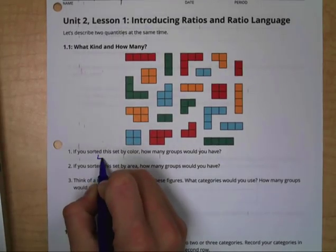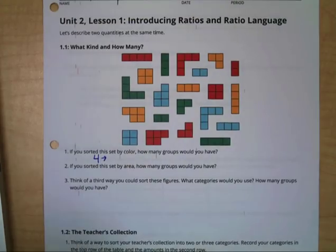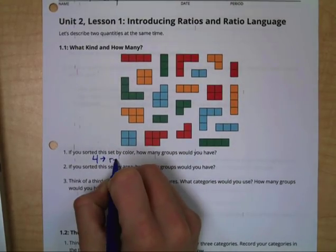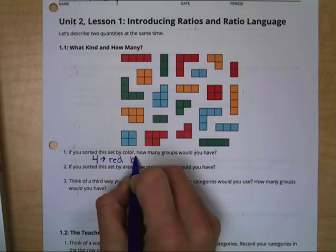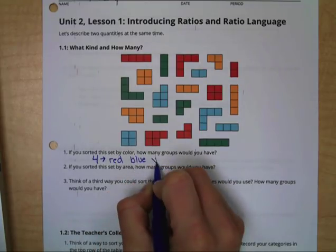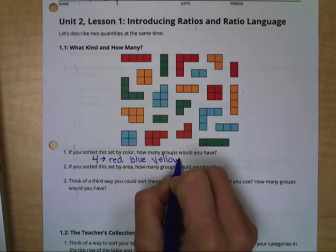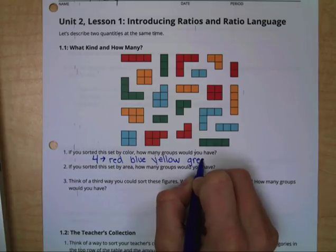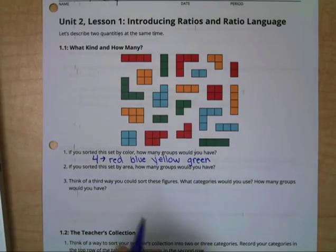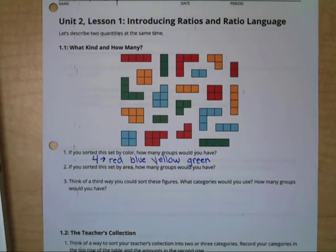We would have four groups, and we could label our groups red, blue, yellow, and green. So far we've sorted them by color.